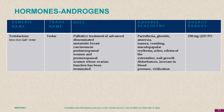Hormones include androgens like testosterone and testolactone. Testolactone is used in palliative treatment of advanced disseminated metastatic breast carcinoma and in post-menopausal women whose ovarian function has been terminated. The side effects include breast tissue changes, glossitis, and anorexia.